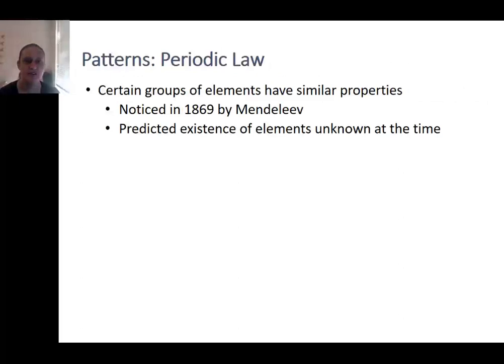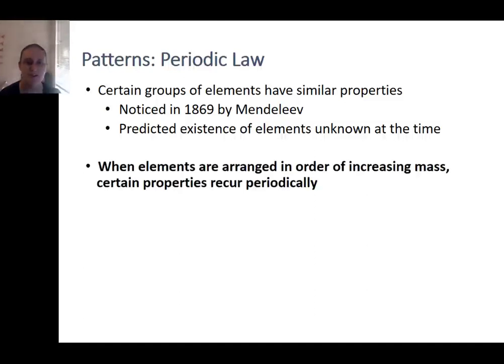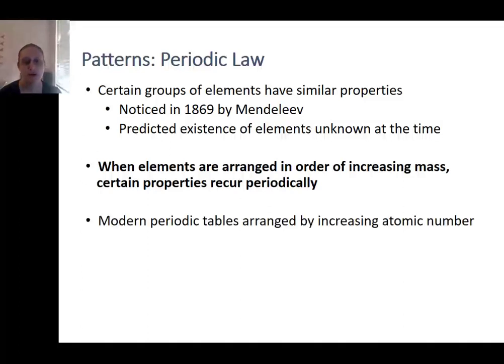The periodic law is basically the idea that certain groups of elements have similar properties, and these occur in a repeating pattern when the elements are arranged by mass. This observation is primarily attributed to Dmitry Mendeleev, who noticed the patterns and even used them to predict the existence of elements which were unknown at his time.